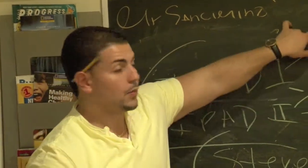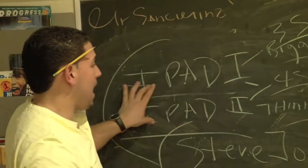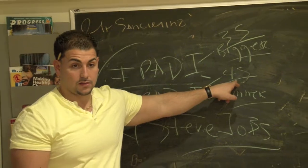So, iPad 1, bigger, but with 3S capability. iPad 2, thinner, with 4S.